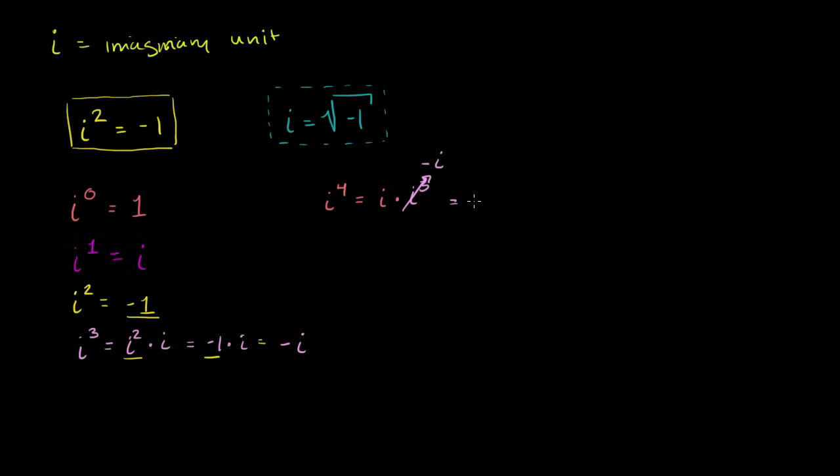So this is i times negative i, which is the same thing as negative 1 times—remember, multiplication is commutative. If we're just multiplying a bunch of numbers, we can switch the order. This is the same thing as negative 1 times i times i. i times i, by definition, is negative 1. Negative 1 times negative 1 is equal to 1. So i to the fourth is the same thing as i to the zeroth power.